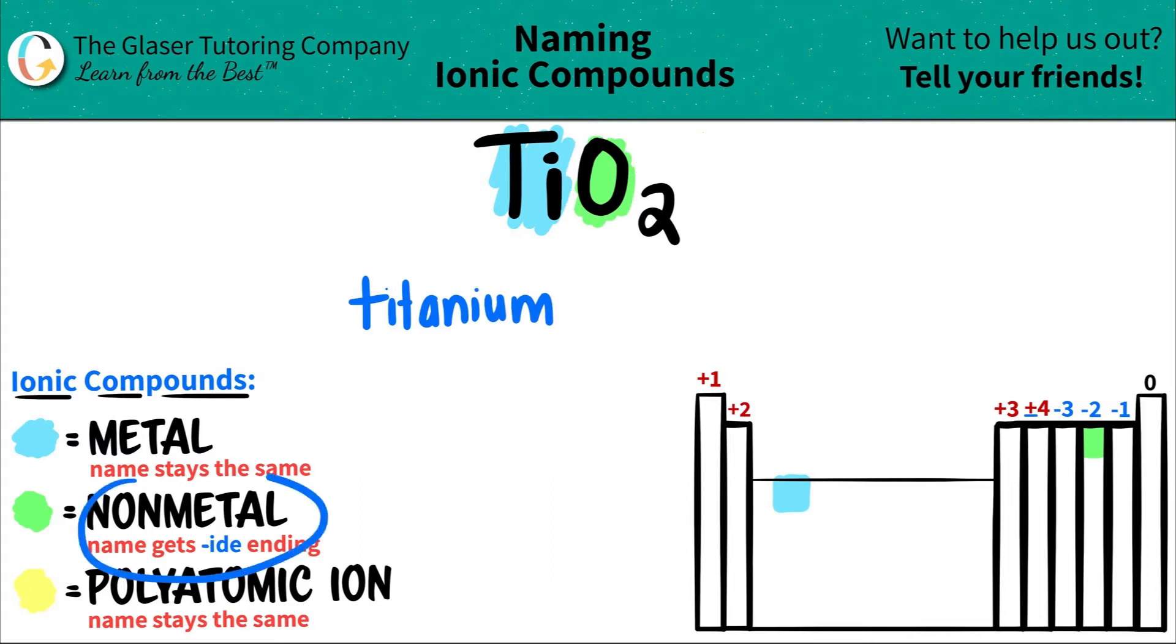Oxygen comes next. That's the non-metal. And the non-metal always gets the IDE ending. So it was oxygen, but I have to turn it into an IDE ending. So instead of oxygen, it will be oxide. So you get rid of this YGEN and you just put IDE. There's your IDE ending. So oxygen will always turn into oxide when it's the non-metal of an ionic compound.